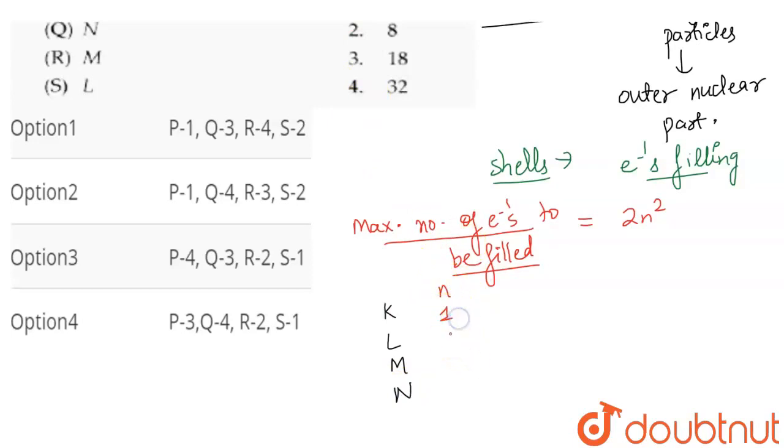K shell is your first shell, L shell is second, M is third, N is fourth. This means that we fill electrons line-wise: first K shell is completely filled, then L, then M, and then N.